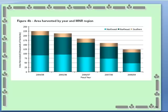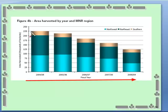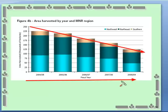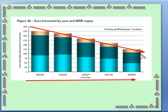The data always comes out later because it takes a while to compile, but one striking fact is that since 2004 with the collapse of the American economy, the trend in the amount of hectares of forest harvested across Ontario has generally diminished over the years. It's starting to level out but is still a significant difference compared to the heyday.